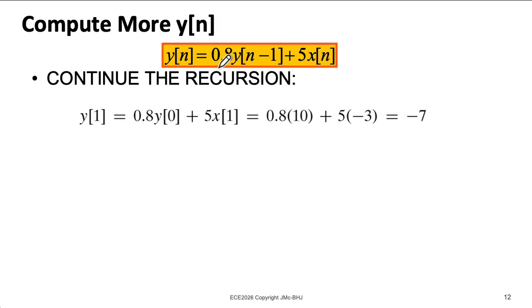Continuing with this first order example, we just saw that y[0] was 10. So we plug that in here in order to find y[1]. Remember, x[1] in our input sequence is minus 3. And plugging that all in gives us minus 7. Now to get y[2], we plug minus 7 in for y[1]. Remember, x[2] is 0. So 0.8 times minus 7 gives us minus 5.6.